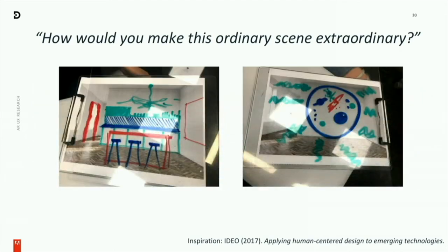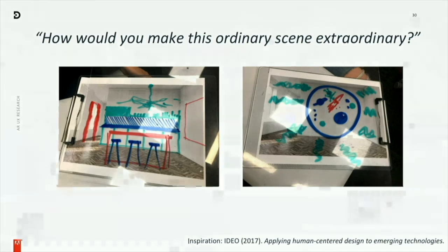What did we find? These two images nicely demonstrate some very key differences. On the left, a very pragmatic interior decorating situation — lots of different colors and furniture. Whereas on the right, something very fantastical: a space orb in an empty apartment with emitters, sounds, animation, and a very rich interactive scene. You could clearly bucket and see patterns in what folks were drawing according to which user profiles they fit, giving us a sense of what they wanted to do in augmented reality.